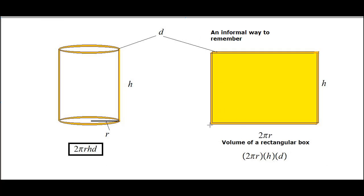So its altitude is the same as the altitude here H, and this edge is the circumference of the circle which is 2πR, and the thickness is D. So this will be just an informal way of remembering this formula.